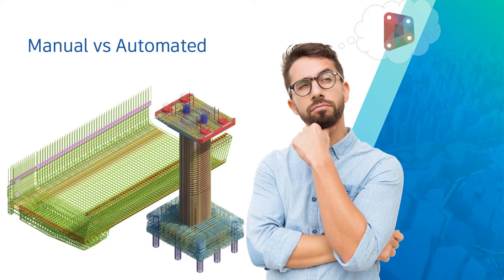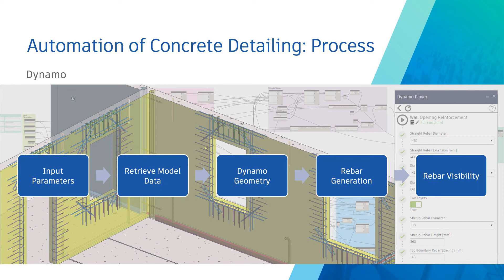Let me talk a bit more about automating the process of adding rebars to concrete models in Revit. The visual programming interface of Dynamo, available in Revit, gives structural engineers and detailers the tools to make their own design tools. You can relatively quickly automate your design processes, saving tons of manual and tedious work and a lot of time. Here on the slide you can see the stages of the process when a script that automates rebar detailing is developed by Revit users.